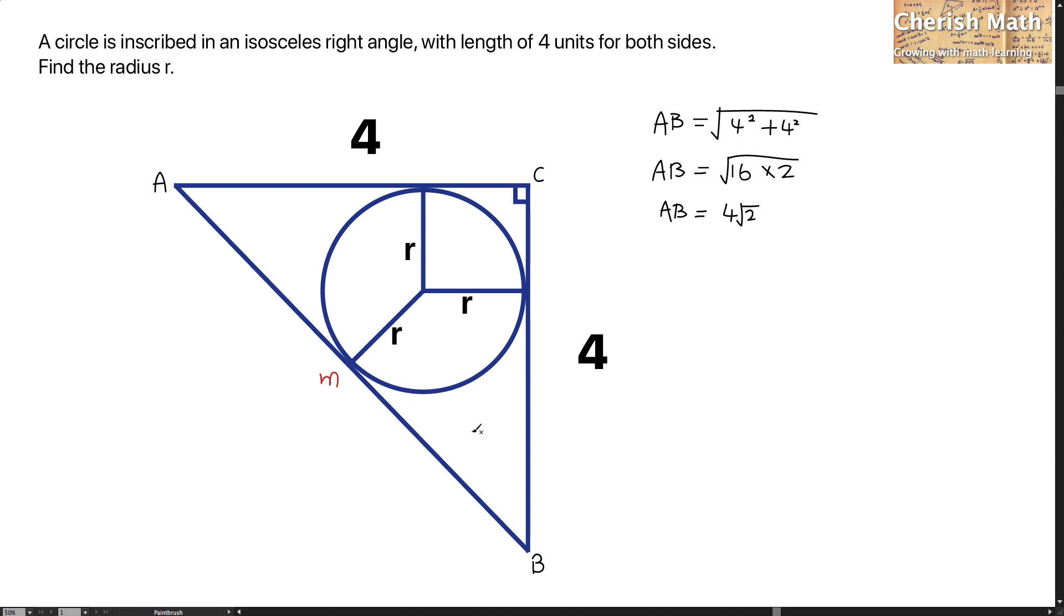Now, M is a point located in the middle of line AB. The length of MB is exactly half of AB. So MB is 4√2 divided by 2, which in exact form is 2√2.